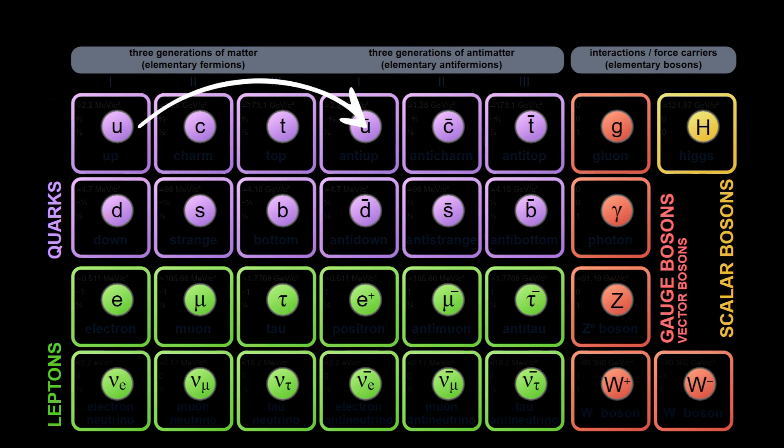For example, an electron and a positron can annihilate to produce photons. The same can happen for a U quark with an anti-U quark.